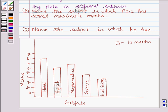Let us now discuss part B. It says, name the subject in which Aziz has scored maximum marks. Now the longest bar shows the maximum marks and we see that in Hindi he has scored 80 marks which is the highest. So the answer to this question is Hindi.